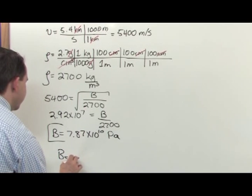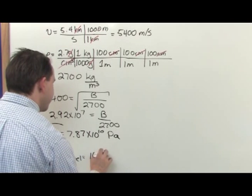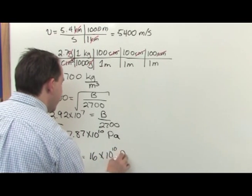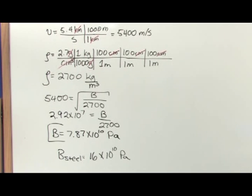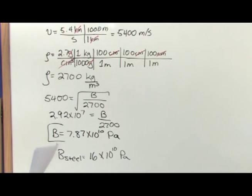For comparison, the bulk modulus of steel is 16 times 10 to the 10 Pascals. So at that depth in the earth, the bulk modulus, which is basically the compressibility, is similar to the compressibility of steel way down there. That's just because it's under tremendous pressure down there, so far under the earth's crust.